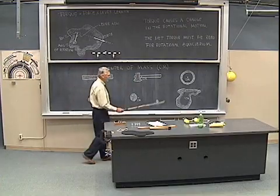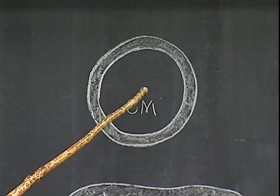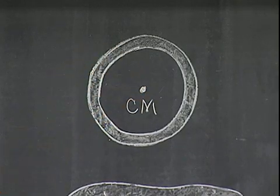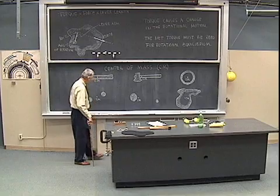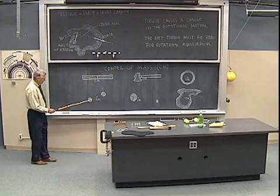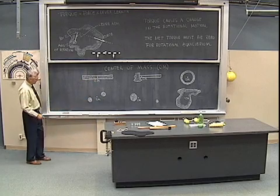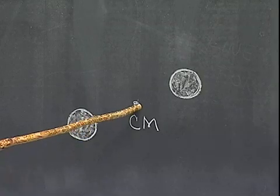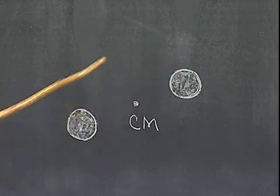For a ring, we don't even have any matter located there. The center of mass is right at the geometrical center of the ring if it's a symmetrical ring. Here I have two objects of approximately equal mass and we find the center of mass would be located at a point halfway between the two objects.